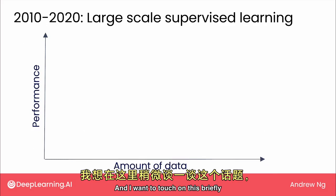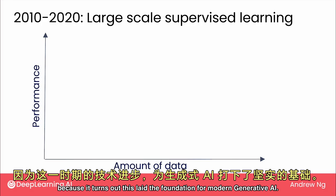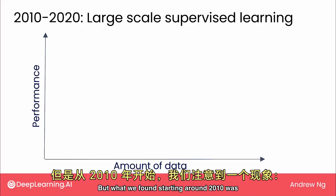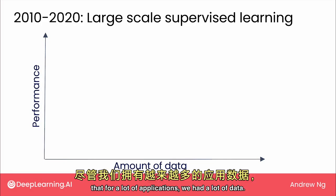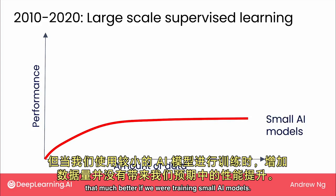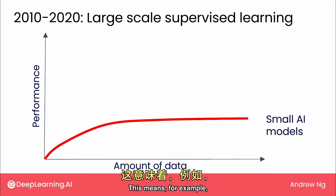And I want to touch on this briefly because it turns out this laid the foundation for modern generative AI. But what we found starting around 2010 was that for a lot of applications, we had a lot of data, but even as we fed it more data, its performance wasn't getting that much better if we were training small AI models.